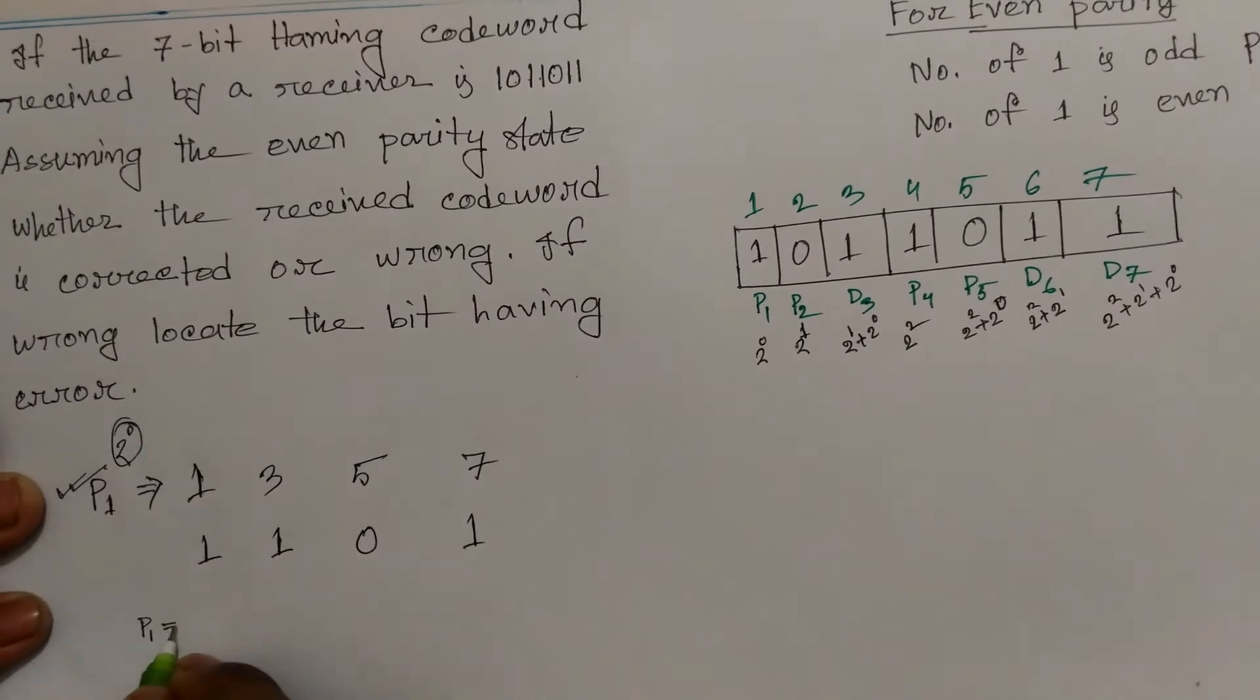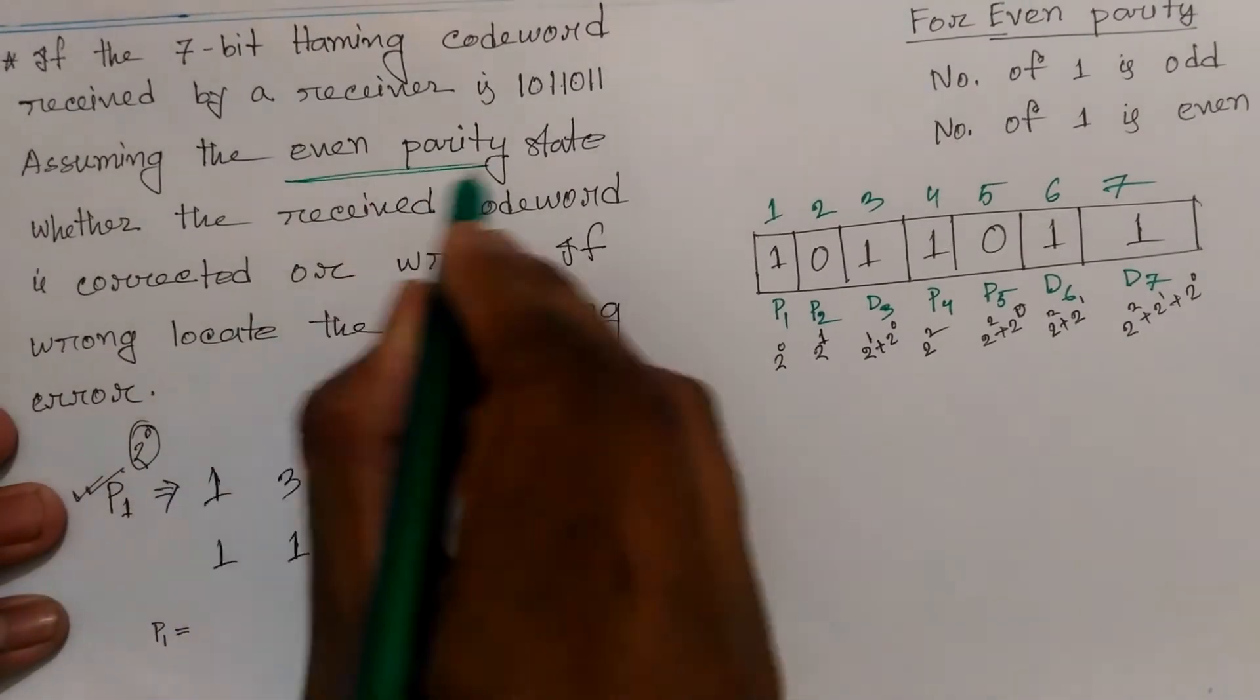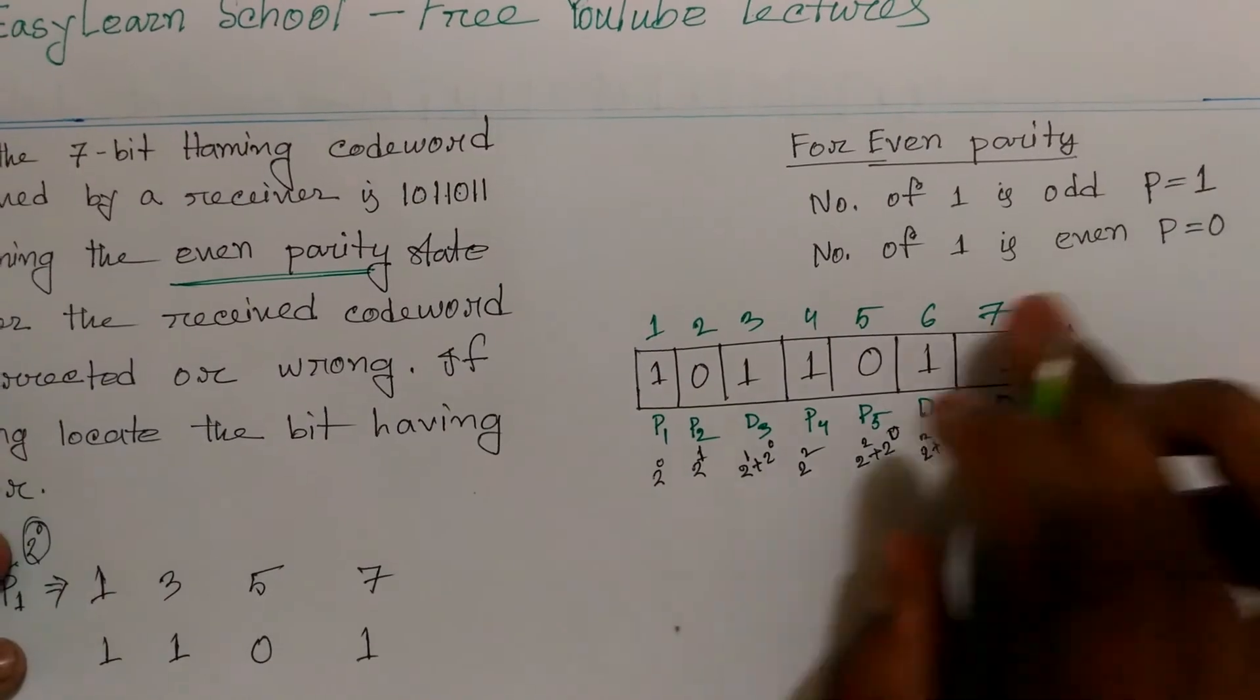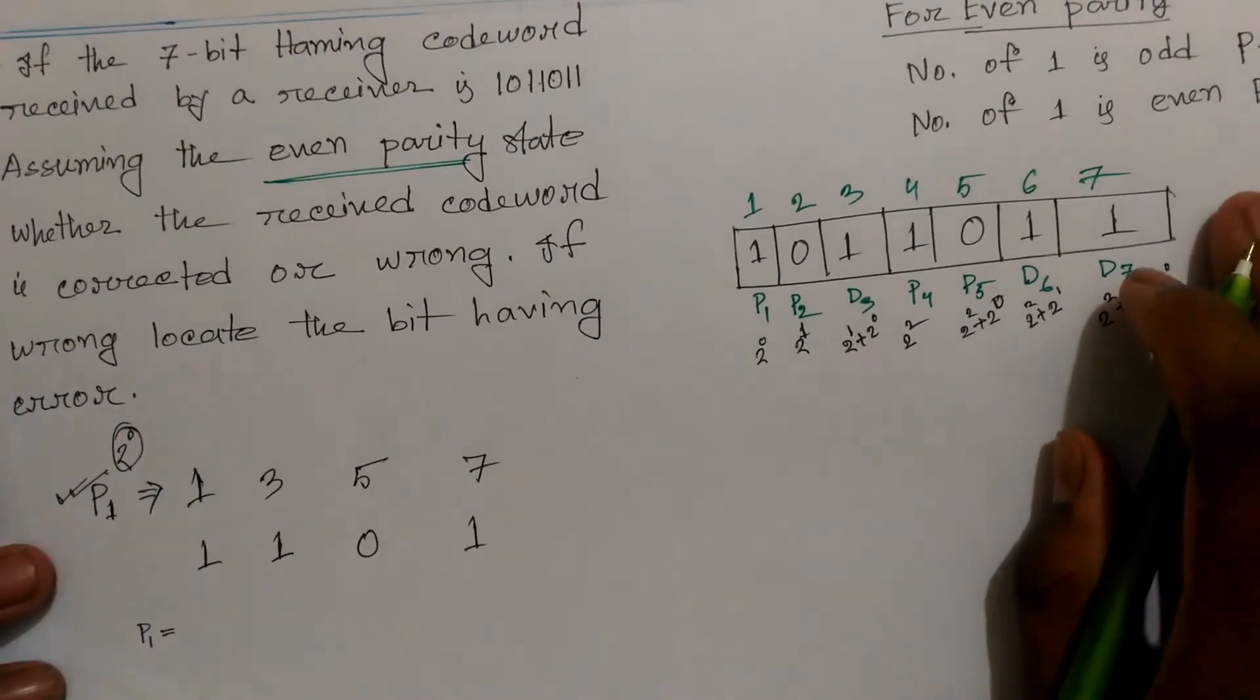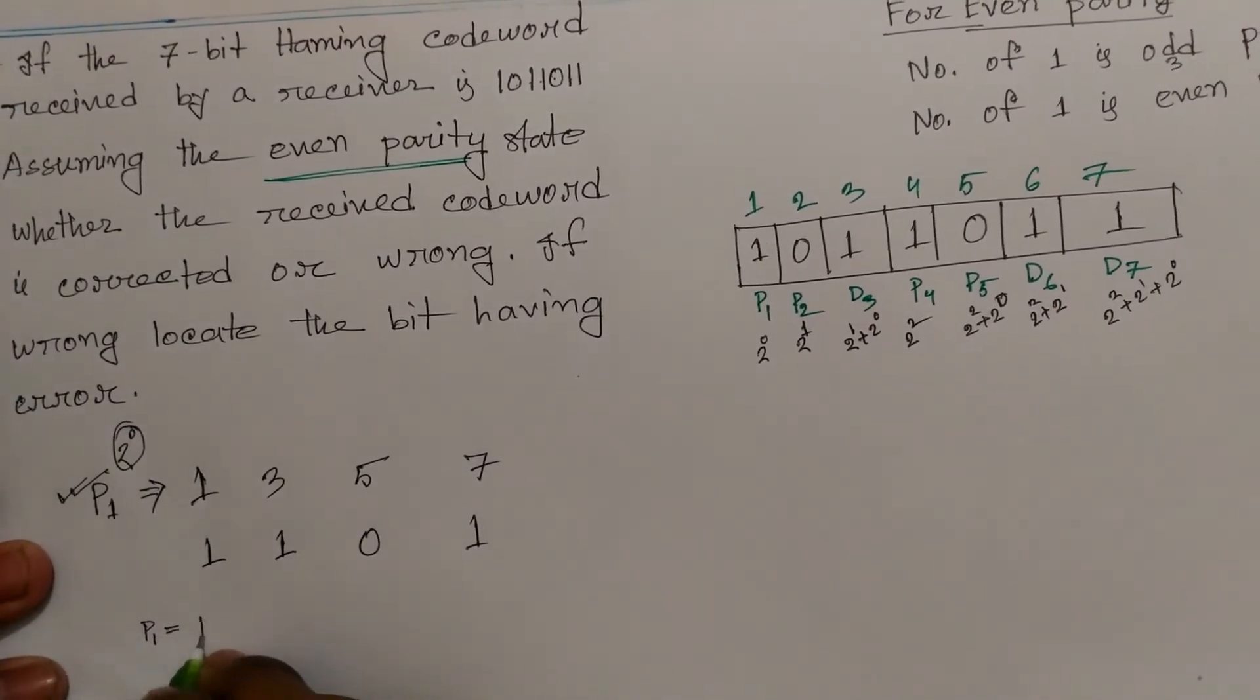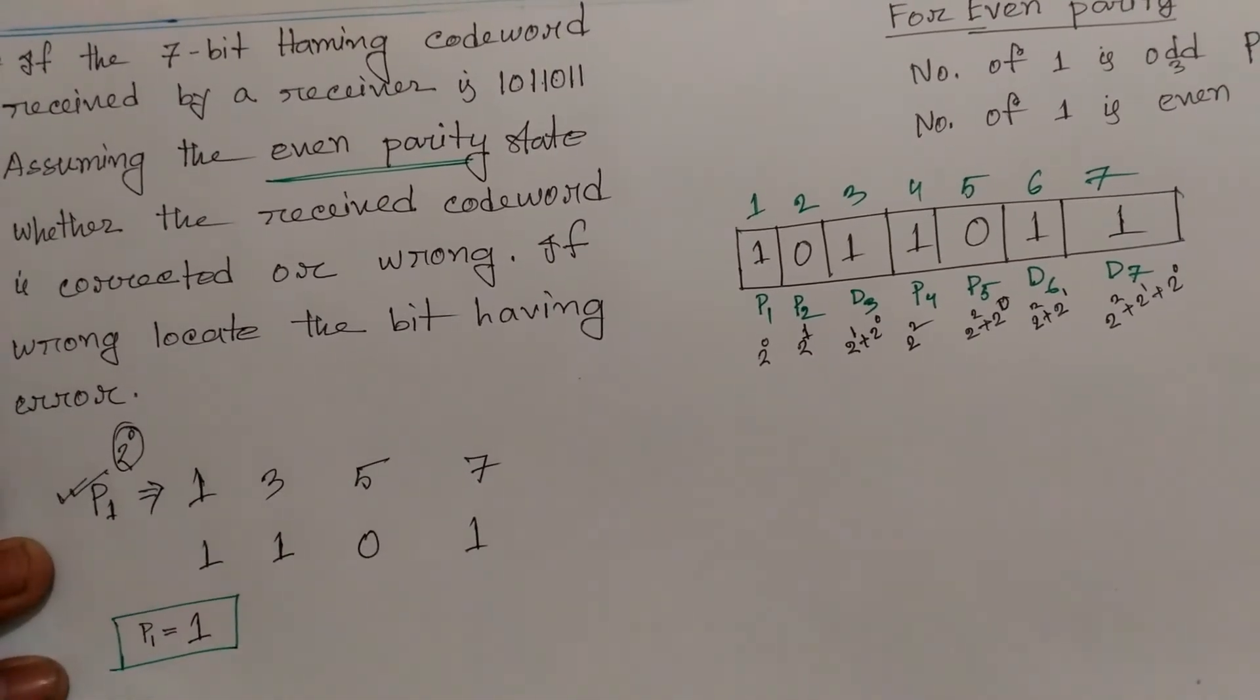Now, P1 equals 0. We check using even parity. The number of 1s is odd (three 1s). Since we use even parity, if P1 is 1, the total count is even. If P1 is 0, the count remains odd, indicating a potential error.